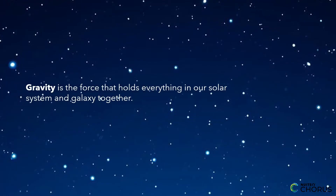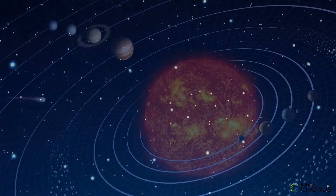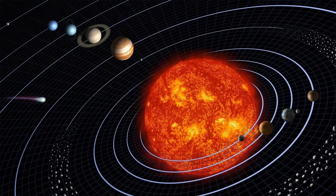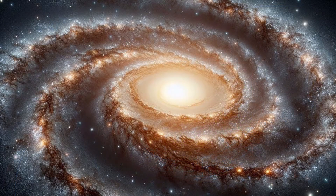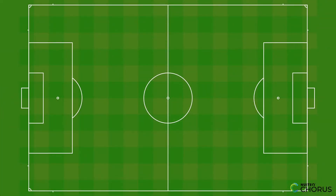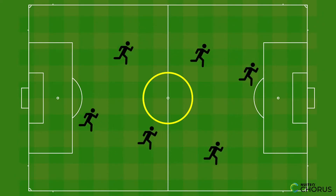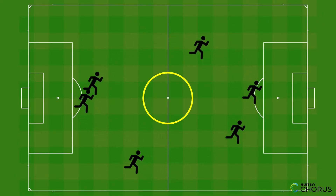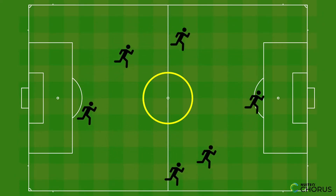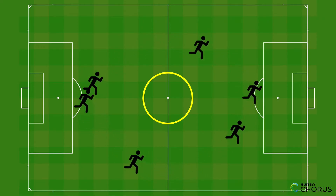Gravity is the force that holds everything in our solar system and galaxy together. It is what keeps the planets in orbit around the sun and what keeps stars in orbit around the center of a galaxy. Imagine a big soccer field — the sun is like the center circle and the planets are like players running around on the field.